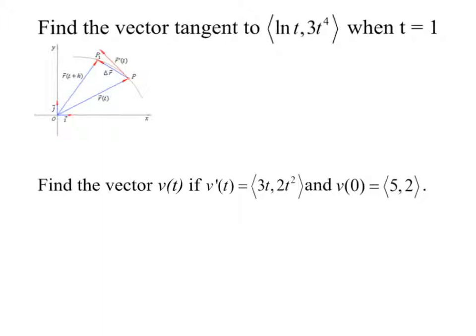Now, to find a tangent vector. Well, you really still need the same types of things, right? You still need a point, which we can get, of course, just plugging 1 in. So, the natural log of 1 is 0, and 3 times 1 to the 4th is 3. But, we also need to know the slope. So, let's get our derivative vector. We'd have 1 over t, and 12t cubed. Now, if I plug 1 into that, I get 1 and 12.